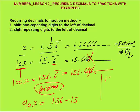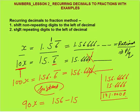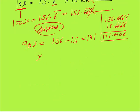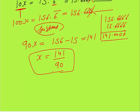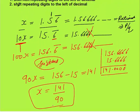The decimal parts cancel because 15.6666... subtracted gives zero in the decimal portion. So 90x equals 141, meaning x equals 141 by 90. If you calculate 141 divided by 90 on a calculator, you will get 1.5666 repeating — the same number we started with.